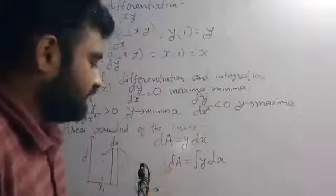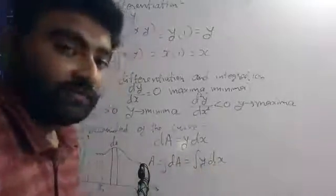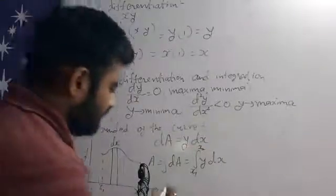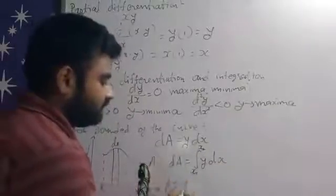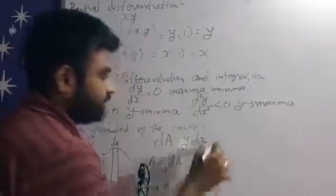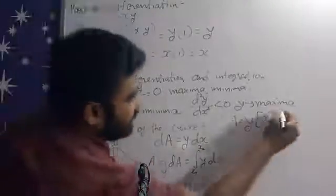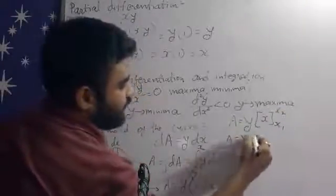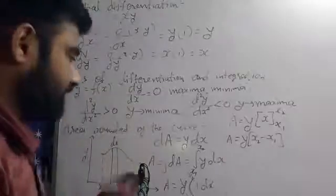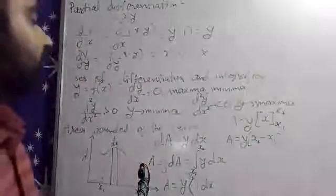Now, to find the total area of the graph, simply integrate both sides: integration of dA equals integration of Y dx. Integrating dA gives the whole area. Since integration is with respect to X, we integrate from the initial value x1 to the final value x2. So A equals Y — since Y is constant, take it outside — times integration of 1 dx from x1 to x2. The integration of 1 dx is x, so A equals Y times (x2 minus x1). This is the area of our whole graph. Whenever we find the area of any graph, we use the integration method.